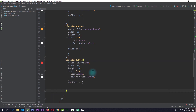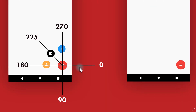The next thing we need to do is move these buttons at particular angles. On the x-axis on the right hand side we have zero degrees, and as we move clockwise we go to 90, 180, 225, and 270. From the three buttons, one needs to be at 180 degrees, the second at 225, and the third at 270. For moving or translating these widgets we need to use the Transform widget.